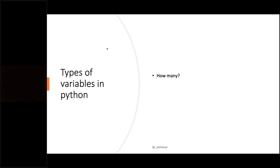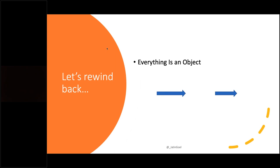How many types of variables are there in Python? You may be surprised — there are none. Python does not actually have variables. You may have already heard that in Python, everything is an object. Python actually has names, which have references to those objects in memory.